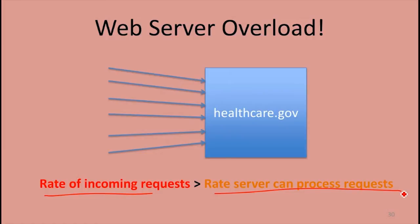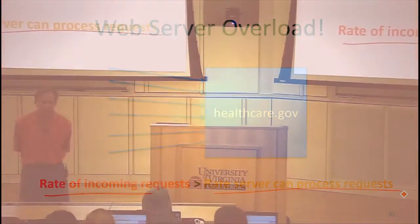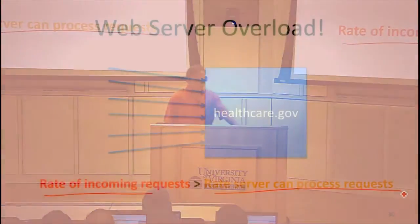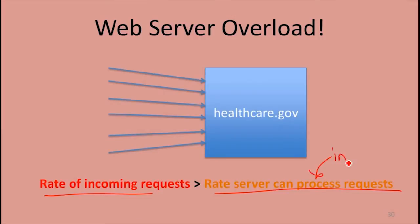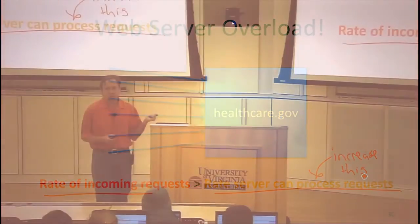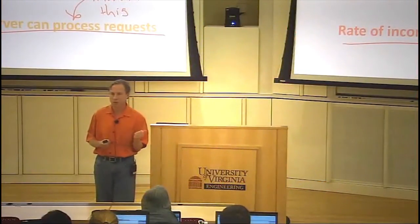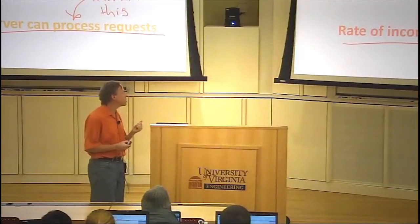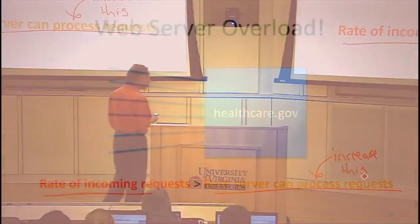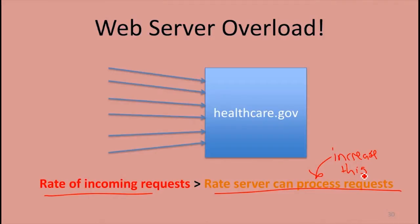You could keep all the requests and keep serving them in order, but are you ever going to catch up if the rates stay the same? You're never going to catch up. If the requests keep coming in faster than you can serve them, you're never going to catch up, because as you serve a request, more requests have come in. So you could try to figure out ways to increase this. If you can increase the rate that your server can handle requests, then maybe you can keep up. If you can't do that, you've got to decide which requests you're going to handle. Until you scale up your server rate, there's no way you can keep up without dropping some of the requests.